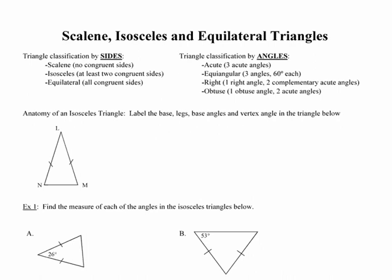If we choose to classify a triangle by its sides, it falls into one of three different categories. It can either be scalene, meaning none of the sides are congruent, isosceles, meaning that at least two of the sides are congruent, and notice that notation at least two, or equilateral, meaning that all of the sides are congruent.